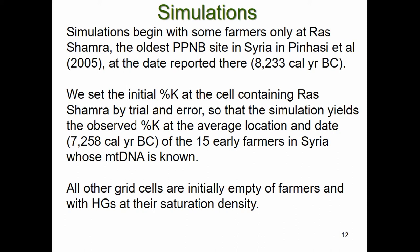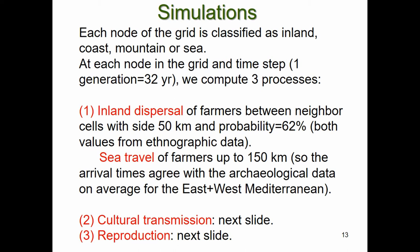We ran simulations to explain this pattern. Simulations begin with farmers only at the oldest PPNB site in the database. We set the initial percentage of haplogroup K at the cell in the rectangular simulation grid containing this site — the origin of the expansion — calibrated by trial and error so the simulation matches the observed percentage at the average location and date of early farmers in Syria with known mitochondrial DNA.